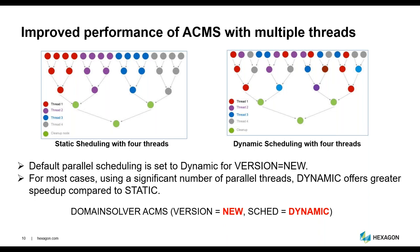The new ACMS method leverages dynamic scheduling for parallel execution, which enhances performance with multiple threads. In most scenarios, when deploying a substantial number of parallel threads, the dynamic option now set as default provides superior speedup compared to the static counterpart from the past. With dynamic scheduling, we automatically adapt computational tasks to parallel SMP threads and ensure consistent engagement of multiple threads throughout the computation, minimizing parallel load imbalance. As load imbalance diminishes, parallel scalability improves, leading to enhanced overall performance.